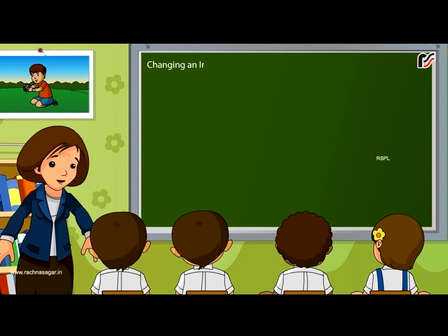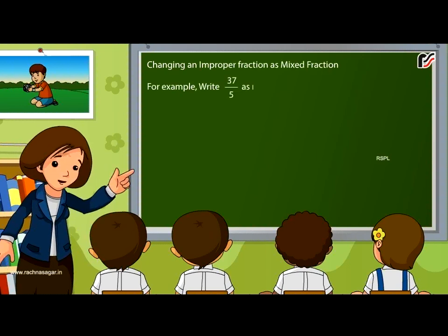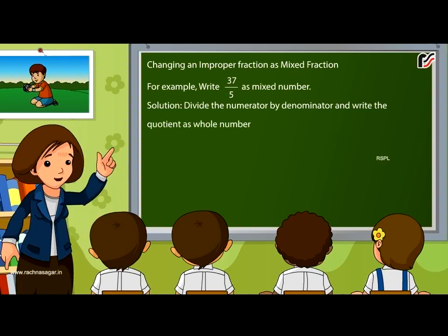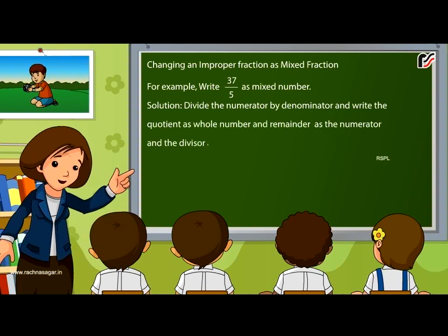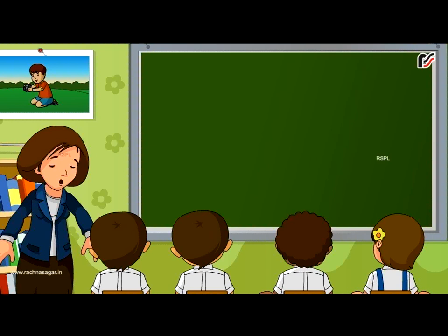Changing an improper fraction to a mixed fraction. For example, write 37 by 5 as a mixed number. Solution: divide the numerator by the denominator and write the quotient as the whole number, the remainder as the numerator, and the divisor as the denominator. So 37 by 5 is equal to 7 and 2 by 5.